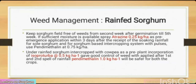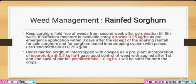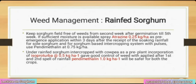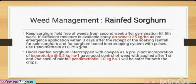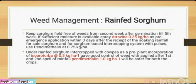Weed management — grain sorghum (rain-fed): keep the sorghum field free of weeds from the 2nd week after germination till the 5th week. If sufficient moisture is available, spray atrazine 0.25 kg per hectare as pre-emergence application within 3 days after receipt of soaking rainfall. For sorghum-based intercropping with pulses, use pendimethalin at 0.75 kg per hectare. Under rain-fed sorghum intercropped with cowpea, pre-plant incorporation of isoproturon at 0.5 kg per hectare gave good control. Pendimethalin 1 kg per hectare will be safer for both crops.